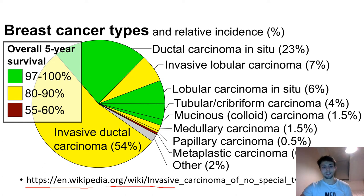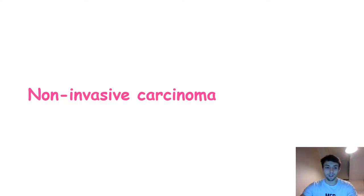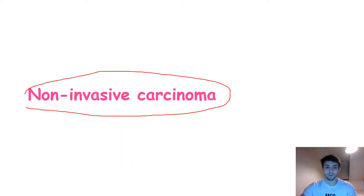This image shows the incidence of some of the types of breast cancer we're going to discuss. Keep in mind that invasive ductal carcinoma is the most common form of breast cancer, so it's useful to have an idea of which types are more common than others.